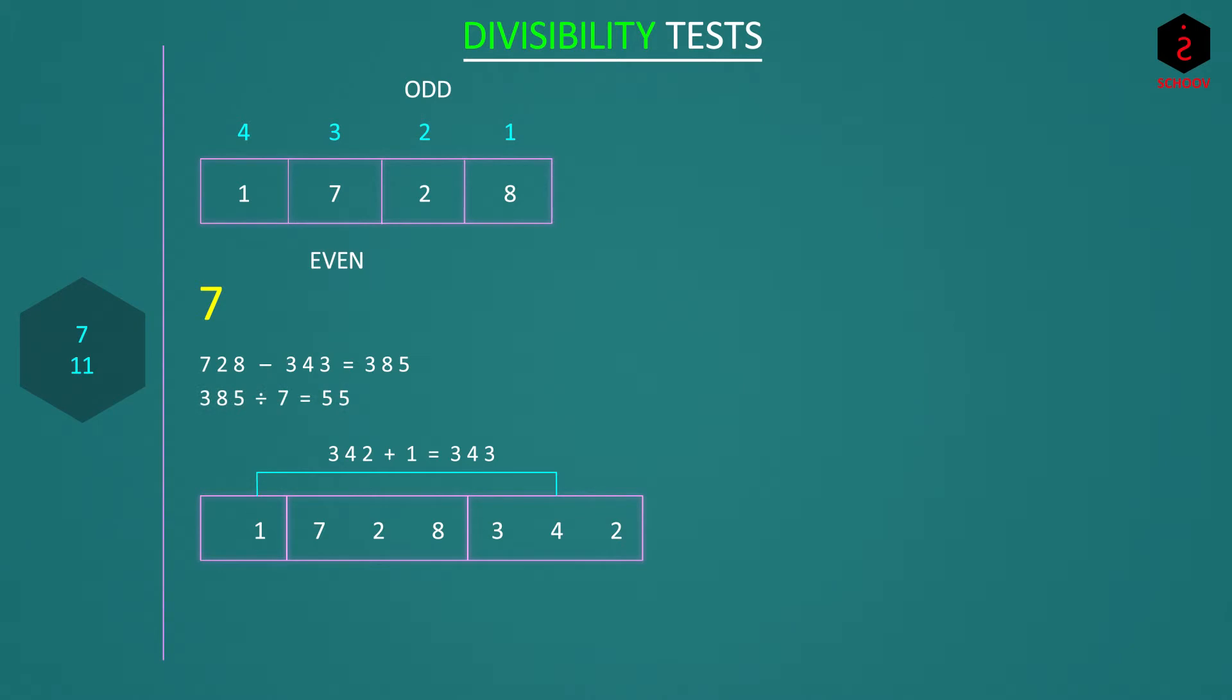And if this difference is divided by 7, the number will be divided by 7. 385 divided by 7 is 55. Hence the number will also be divisible by 7. Now although dividing 385 by 7 might be a bit lengthy, it is definitely faster than dividing the actual number by 7. So test for 7 is, difference of sum of alternate blocks of 3 digits must be a multiple of 7.